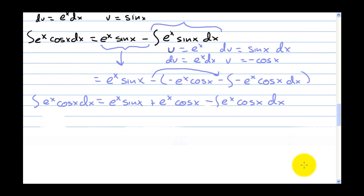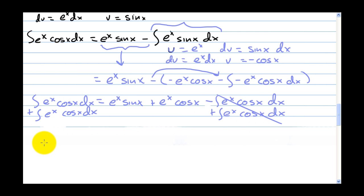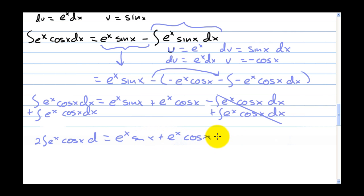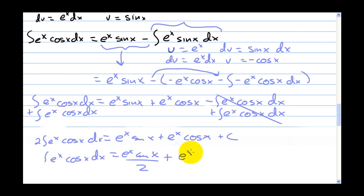That's actually a good thing — we add the integral of e to the x cosine of x dx to both sides. Now there are two of them on the left, and the right-hand terms cancel out. So two times the integral of e to the x cosine of x dx equals e to the x sine of x plus e to the x cosine of x plus c. Dividing by two: the integral equals e to the x sine of x over 2 plus e to the x cosine of x over 2 plus c — since c over 2 is still just a constant.